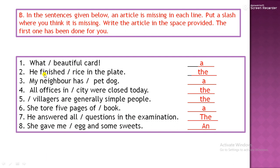In the sentences given below, an article is missing and we know what articles are. Article is missing in each line. Put a slash where you think it is missing. Write the article in the space provided. The first one has been done for you. So now students, what is there in this exercise? One article is missing. Article A and N are indefinite article and article The is definite article.